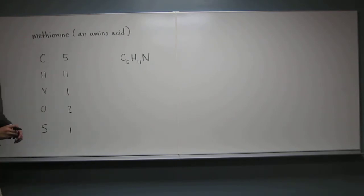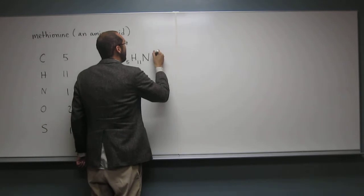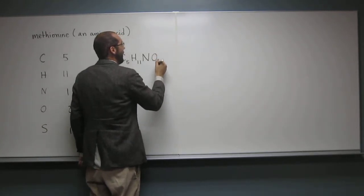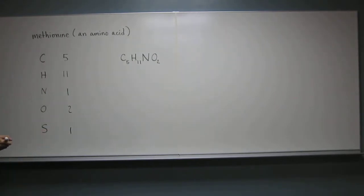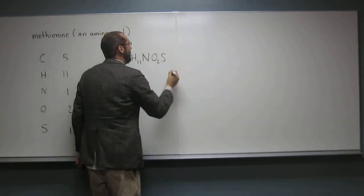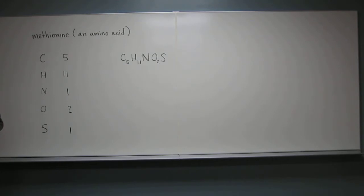So now what do we put? O. And do we put a subscript on that one? Yes. 2. And what is that? 2. 2. And what's last? S. S. And do we have a subscript on that one? No. OK. Why not? Because it's a 1. Just a 1 and the subscript is understood, right? Right. OK.